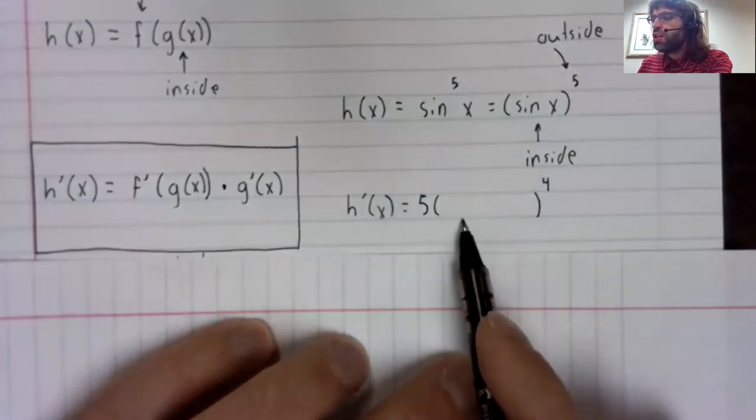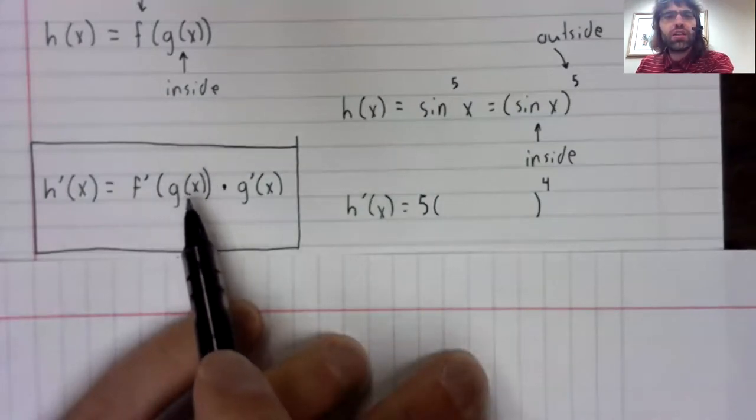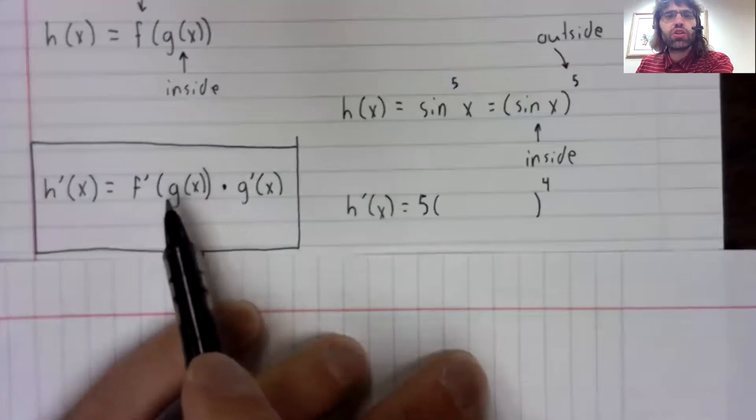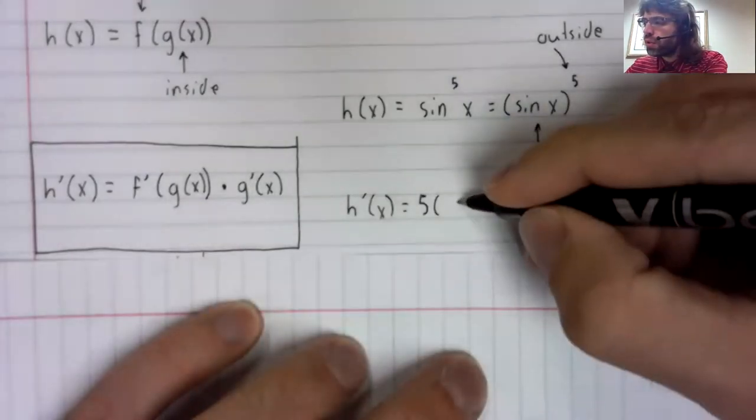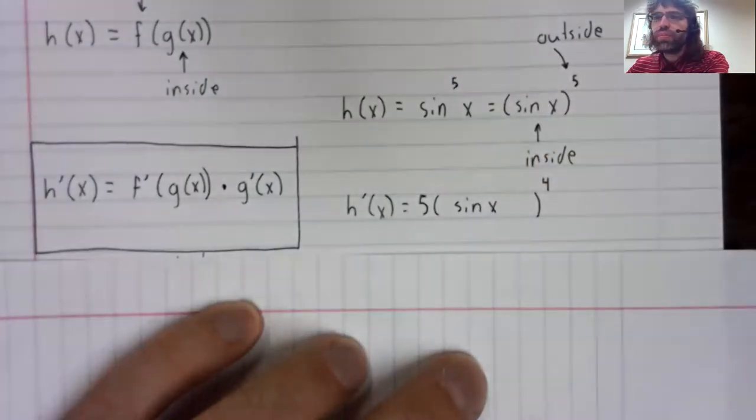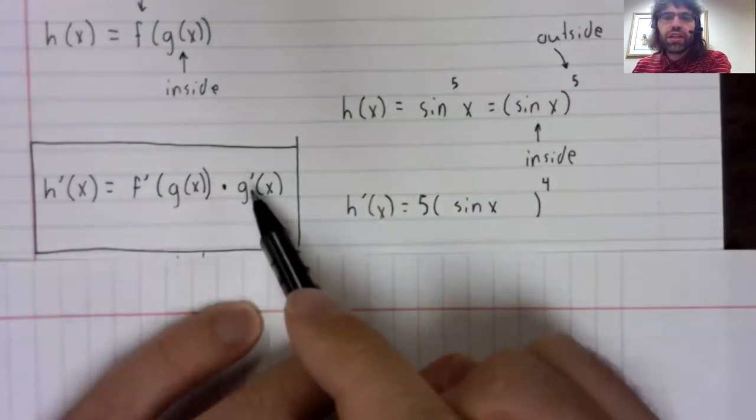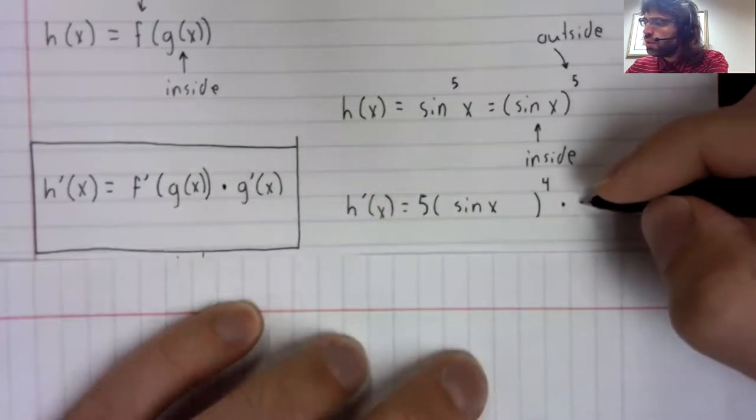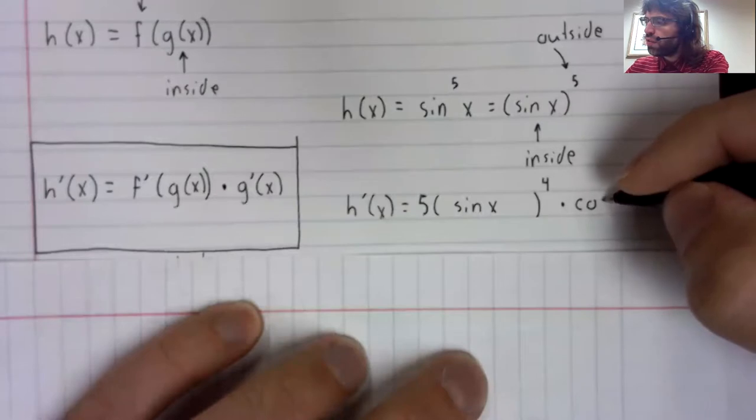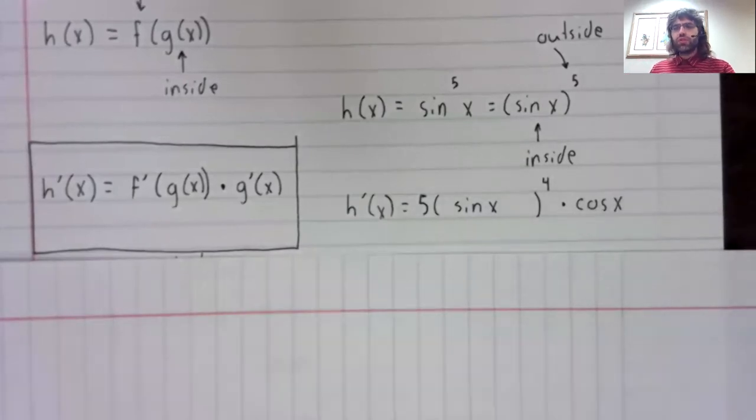What goes here? Well, according to the chain rule, we should stick the inside function in there. So the sine of x, and then we should multiply by the derivative of the inside function. The derivative of the sine is the cosine. And that's our solution.